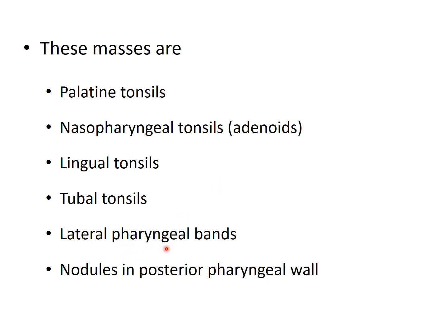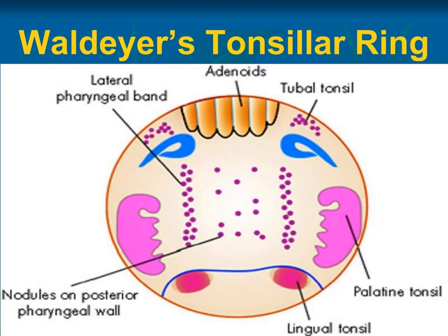The lateral pharyngeal bands and posterior pharyngeal wall nodules are enlarged in pharyngitis. This diagram shows the palatine tonsils, the adenoids present in the nasopharynx, tubal tonsils around the opening of the Eustachian tube, lingual tonsils on the posterior one-third of the tongue or base of tongue, and the lateral pharyngeal bands behind the tonsils along with nodules in the posterior pharyngeal wall.